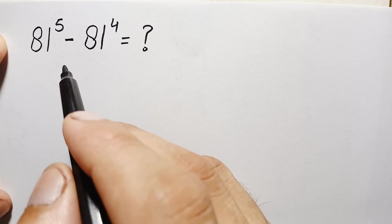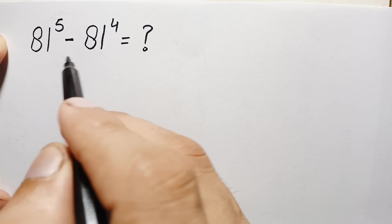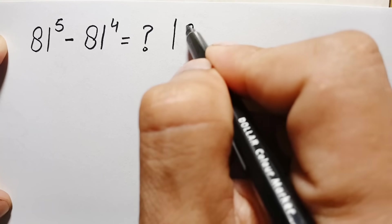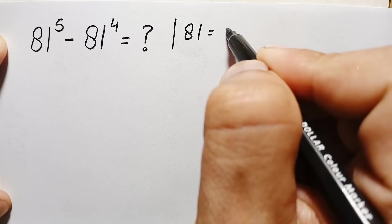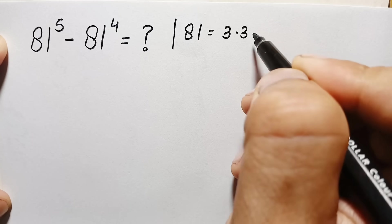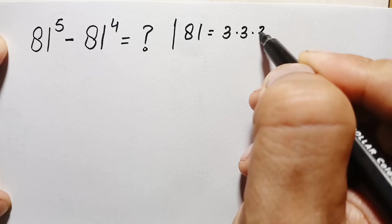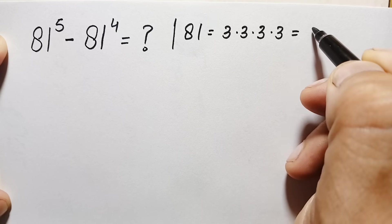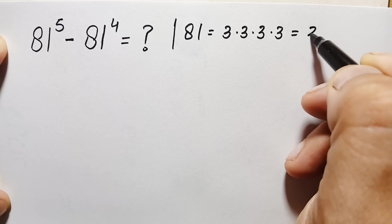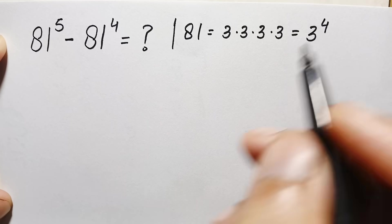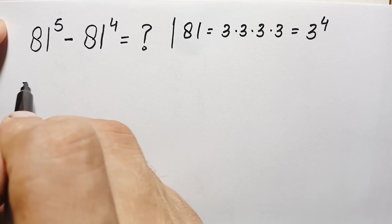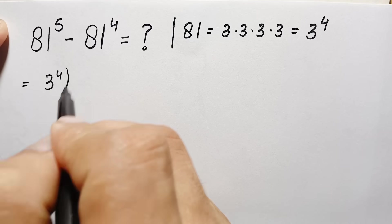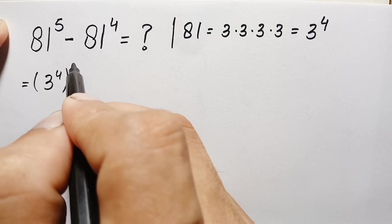Now how can we solve this math problem? First of all, we can write 81 in base form. This can be written as 3 times 3 is 9, 9 times 3 is 27, 27 times 3 is 81 — so 3 is multiplied 4 times. Therefore we can write this as 3 to the power 4. So we replace both bases of 81 with 3 to the power 4.